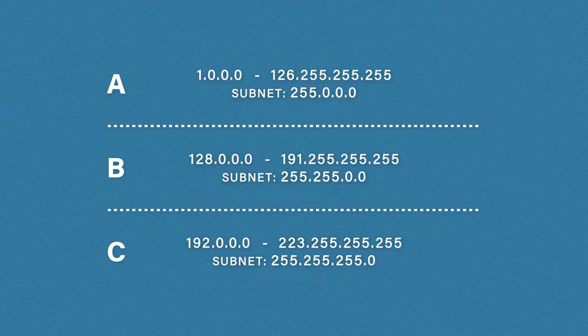So you need to be able to look at an IP address and know which class it belongs to. The easiest way to do this is to memorize the first octets. If an IP starts with the number 10, straight away you know it's a class A network. If it starts with 192, you know it's class C, and so on.